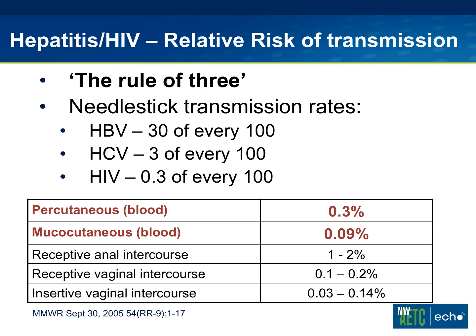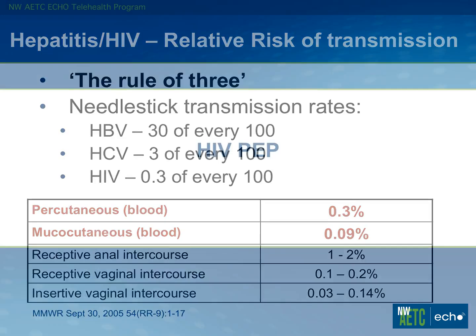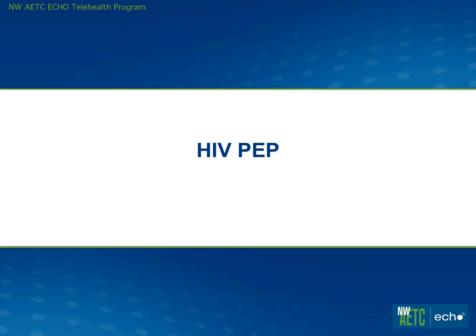Going into a little more detail on HIV, I wanted to show the relative risks of different types of exposures. Occupational percutaneous and mucocutaneous exposures are estimated at 0.3% and 0.09% respectively. I also put other known risks for HIV on there, with receptive anal intercourse being the higher one at 1% to 2% risk. These are modulated by different factors, depending on the viral load of the source patient and in the case of sexual exposure, concomitant sexually transmitted infections.